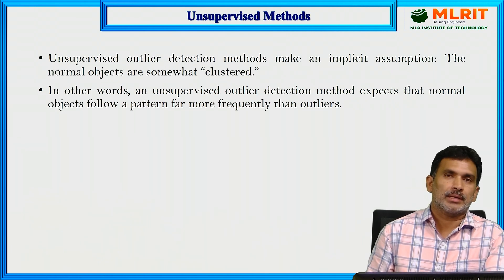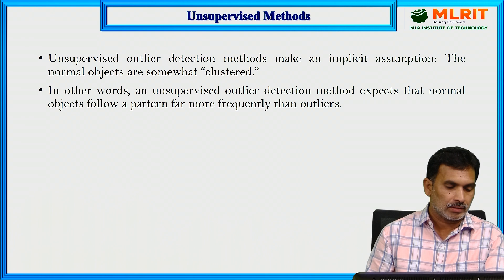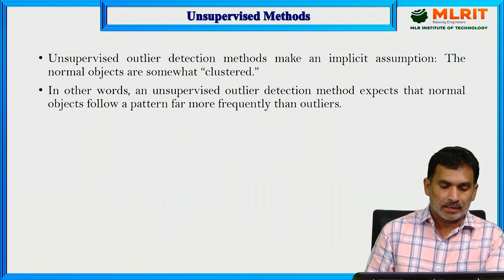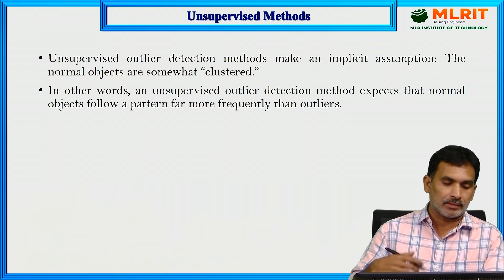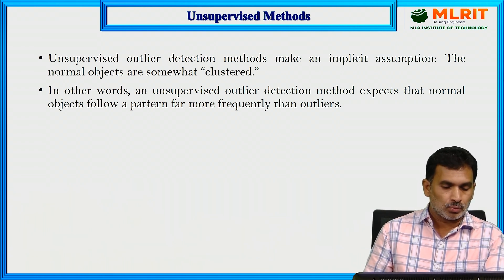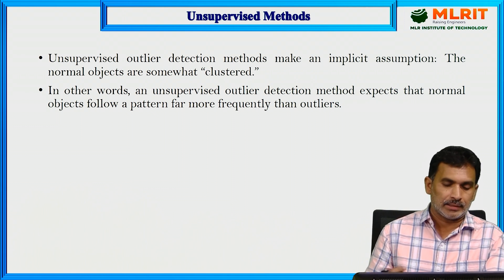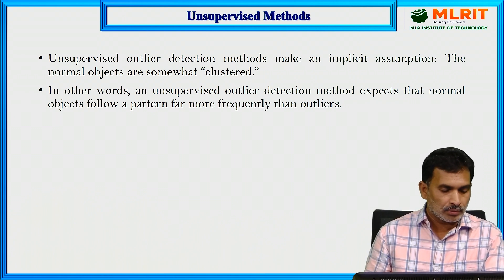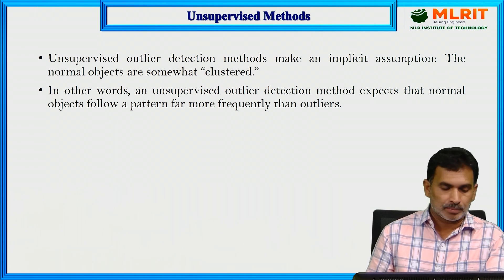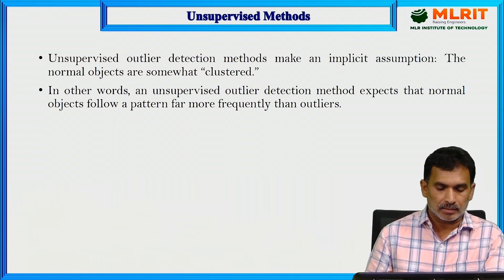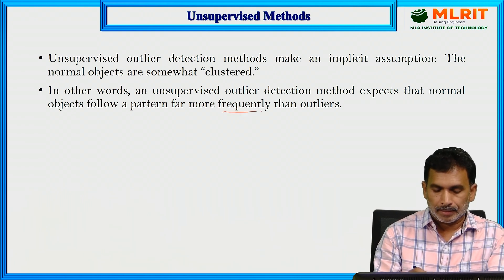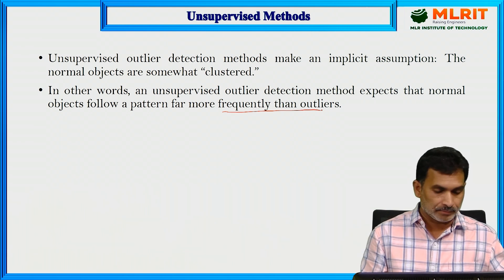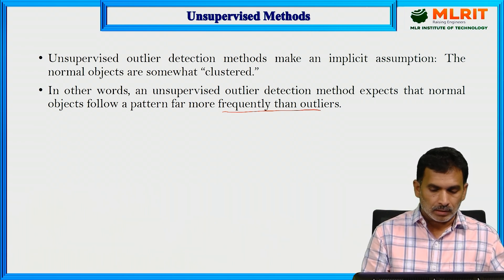Unsupervised outlier detection methods make an implicit assumption that normal objects are somewhat clustered. We can also use resampling to create duplicate samples so that the dataset is balanced. In other words, an unsupervised outlier detection method expects that normal objects follow a pattern far more frequently than the outliers.